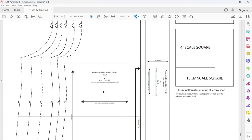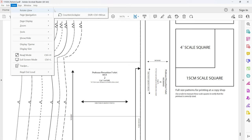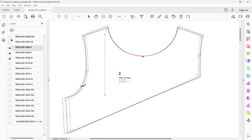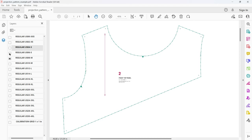If your pattern file needs to be rotated in order to make the grain line parallel with the fabric salvage, click View, Rotate View, and then choose Rotate Clockwise or Counter Clockwise. Check the layers of the document to see if you can just display your specific size.